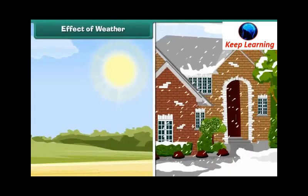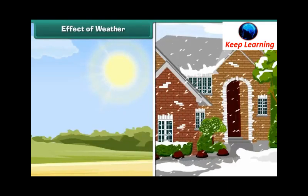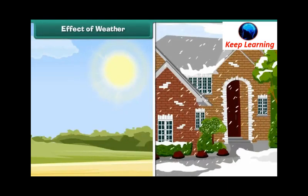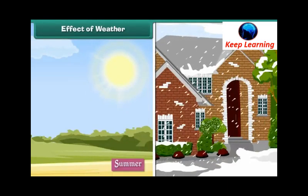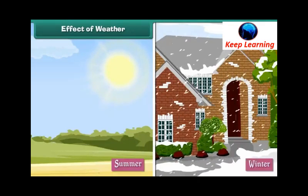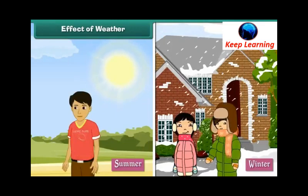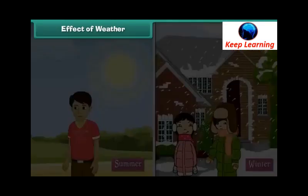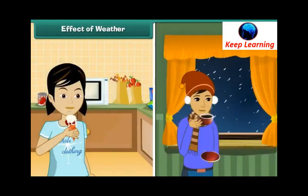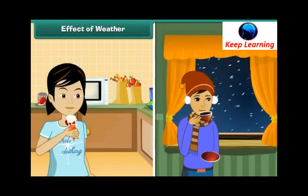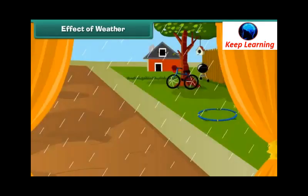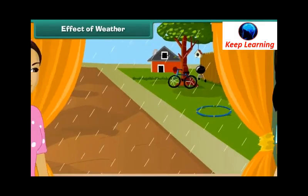Weather affects us in many ways. For example, we wear clothes according to the prevailing weather conditions. We wear cotton in summers and woolens in winters. The food that we eat also changes according to weather. We prefer to eat cold things in summers and hot things in winters. We change our routine according to the changes in weather.